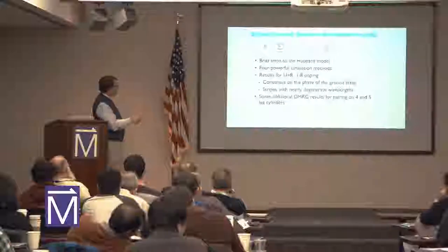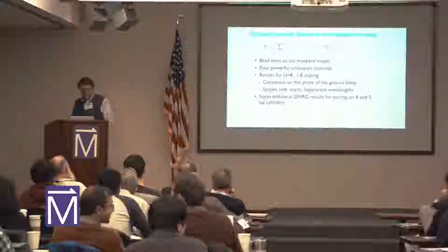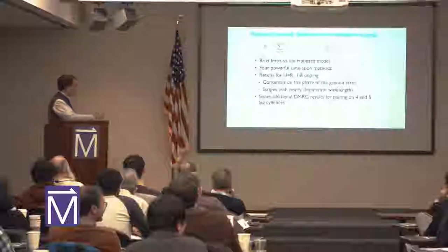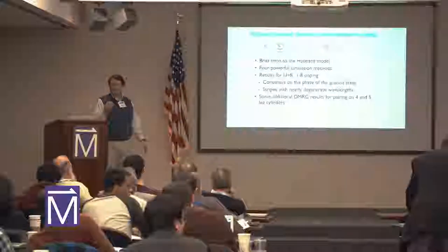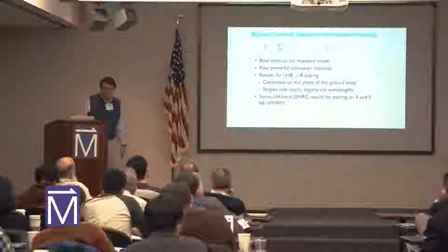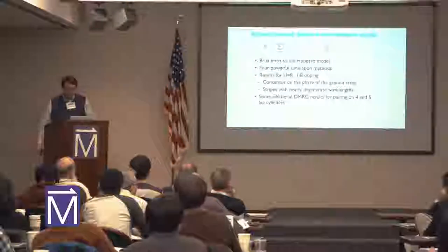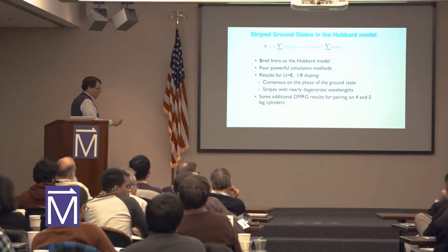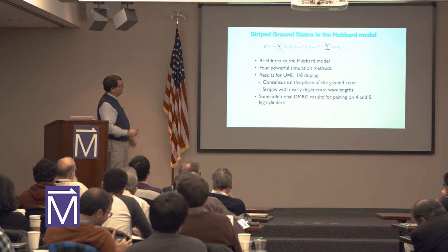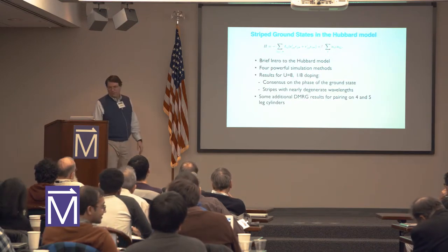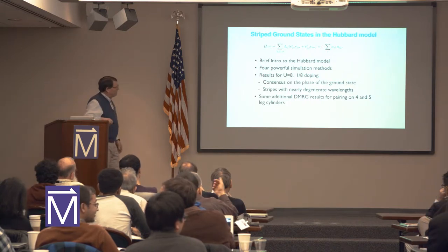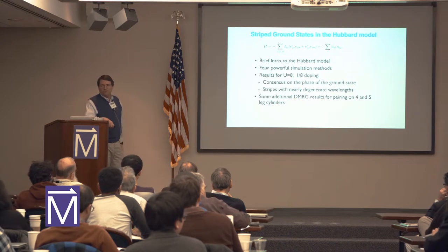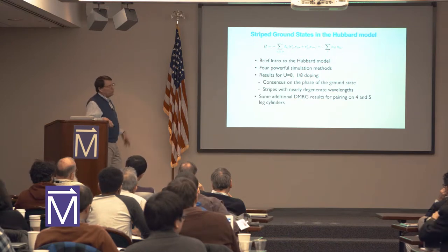I'll skip mostly the intro to the Hubbard model, but I want to talk about these four powerful simulation methods that we've combined forces with to try to get some more definite conclusions than we can usually get with just one method. In particular, we zeroed in on a particular point in the phase diagram — U equals eight and one-eighth doping — certainly a key point for understanding the cuprates, also a point where you're most likely to get stripes, which is indeed what we find.